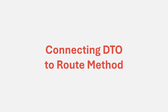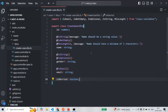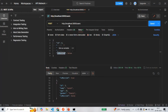In the last lecture, we created a DTO class which we want to use for validating a request body. In order to use a DTO class for validating a request body, we need to connect that DTO class to the route method which is going to handle that request. For example, we want to use this createUserDTO class to validate the request body which we are going to receive from a POST request for creating a new user.